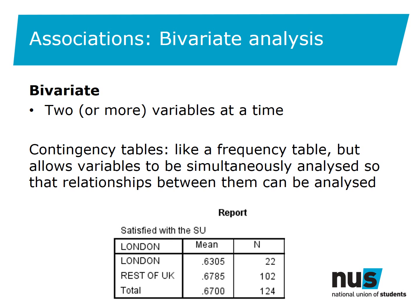A more useful way to use descriptive statistics is to look at two or more variables at a time, which allows you to draw some conclusions or hypotheses from the data. Bivariate analysis looks at two variables at a time to uncover whether the two are related — exploring whether the variation in one variable coincides with variation in another. Here's a table showing the association between student union satisfaction as recorded by the NSS and region, in this case London versus the rest of the UK. London students unions score on average four points lower than the UK average, suggesting the institution's location in London may have some relationship to a lower satisfaction score, although we don't know what that relationship is.